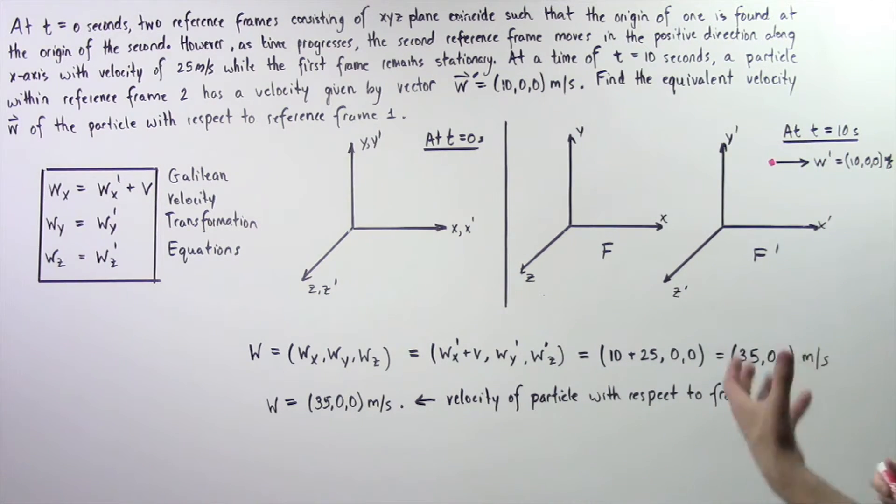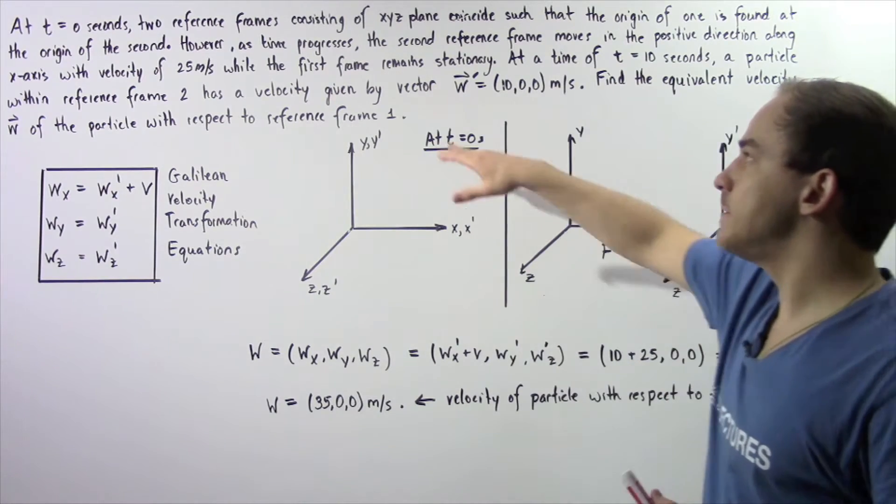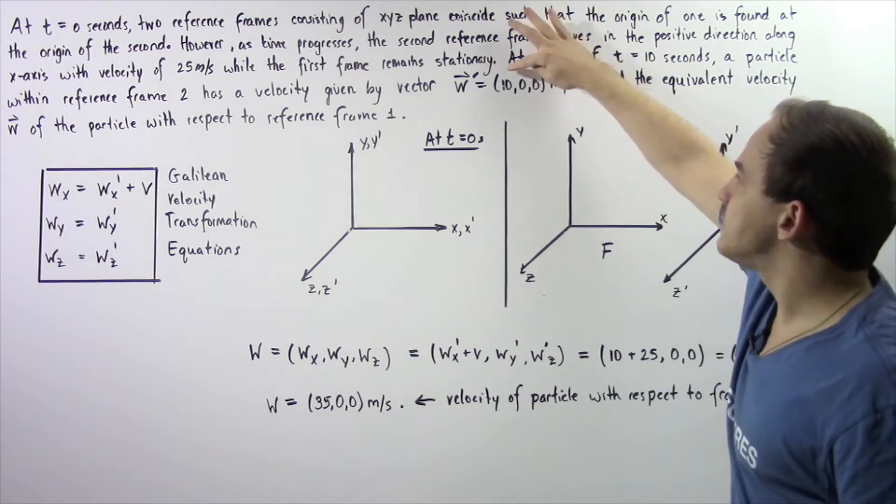So at a time of 10 seconds, a particle within reference frame number two has a velocity given by the velocity vector w prime.